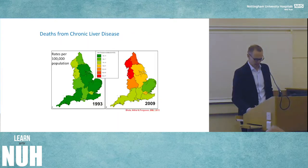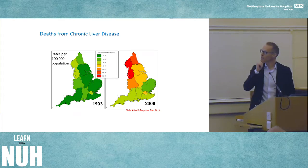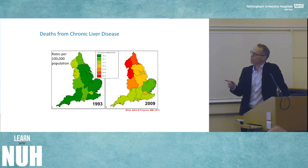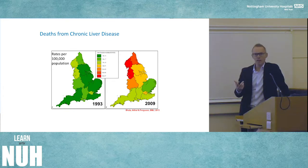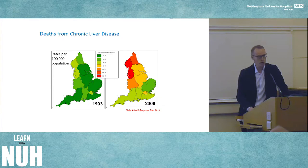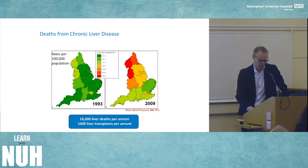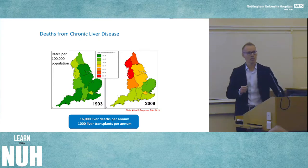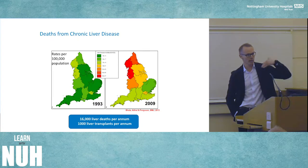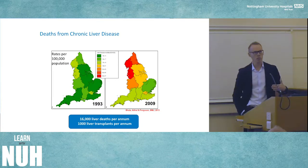Background on chronic liver disease — this is a changing field even over the last 10 to 30 years in terms of disease prevalence. Data from 1993 showed around five deaths per 100,000 population per year in the East Midlands, and by 2009 that had increased to around 10 per 100,000 — it had doubled over around a 10-year period. In the UK there are around 16,000 deaths from liver disease, which is twice that of pancreatic or gastric cancer and around half that of colorectal cancer, but there are only around a thousand liver transplants a year.